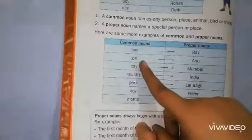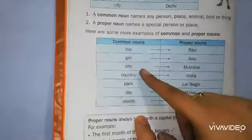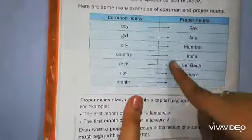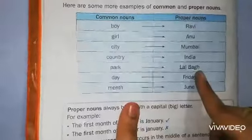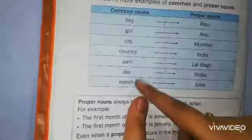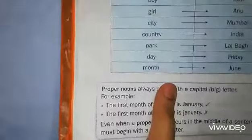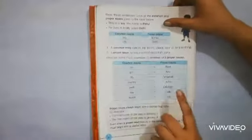Here are some examples. This is common noun and proper noun. Common noun is called boy. Boy is common, no specific name. But if the boy has a name, then this is called proper noun because this is a special person. City is common noun, but when we say Mumbai, this is called proper noun. So you have learned common noun and proper noun.